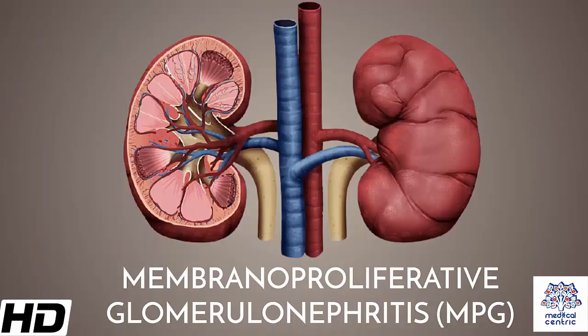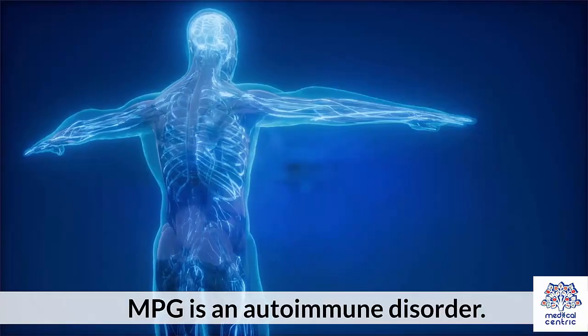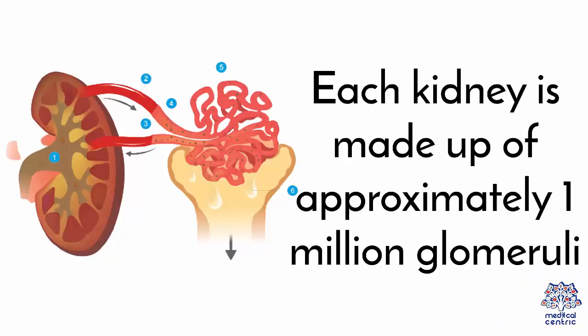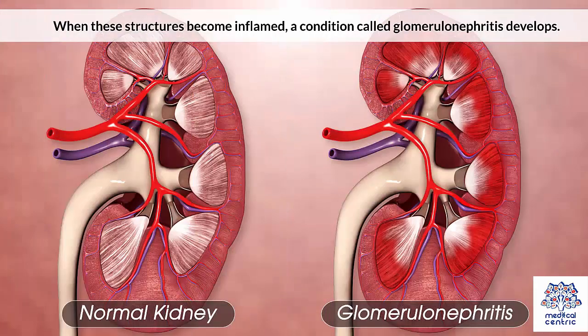Today's topic is membranoproliferative glomerulonephritis, or MPGN. Membranoproliferative glomerulonephritis is a specific type of glomerulonephritis that occurs as a result of immune deposits in the kidneys, resulting in structural changes to the glomerular capillary walls. MPGN is an autoimmune disorder. Each kidney is made up of approximately 1 million glomeruli. Glomeruli remove extra fluid, electrolytes, and waste from the bloodstream. When these structures become inflamed, a condition called glomerulonephritis develops.